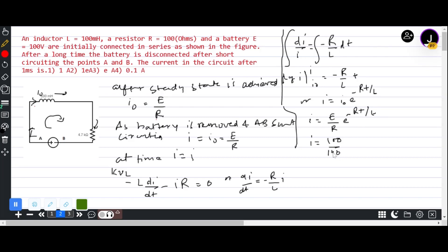times e to the power minus 100 times 1 millisecond, which is 10 to the power minus 3 seconds, over 100 times 10 to the power minus 3. The 10 to the power minus 3 and 100 cancel out, so what we're left with is